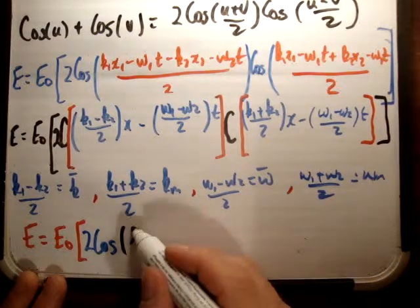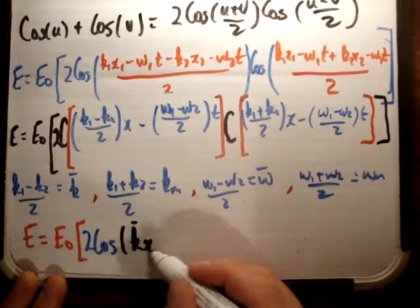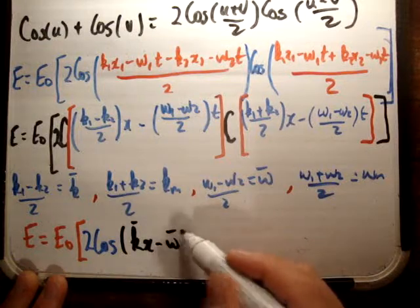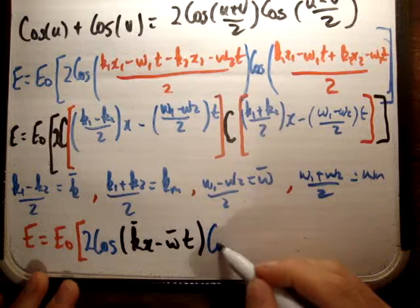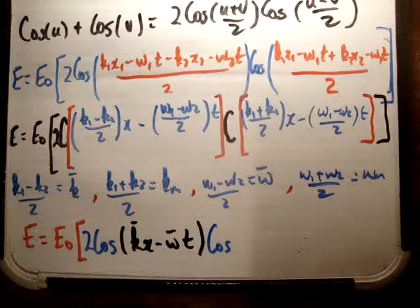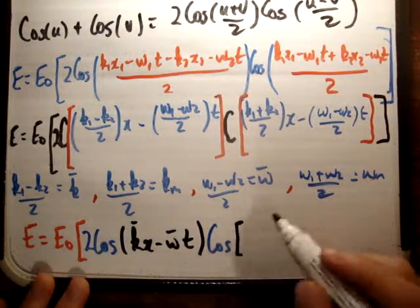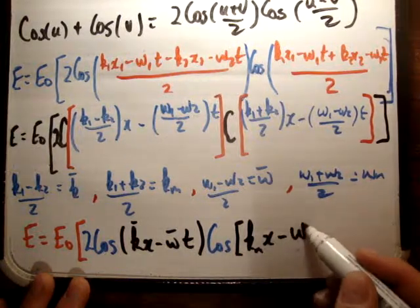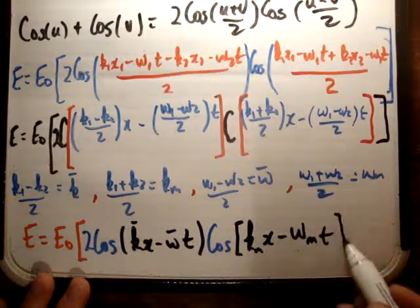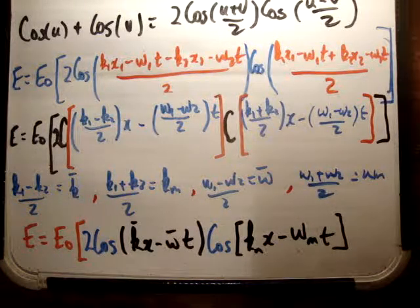Multiply that by the cos of k sub m x minus omega sub m t, like that. And close that off there. One of them will be a group velocity and one of them will be a phase velocity.